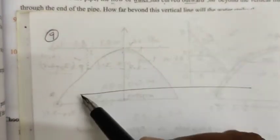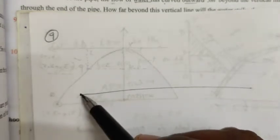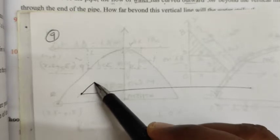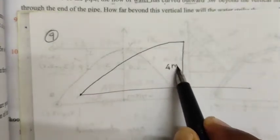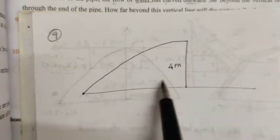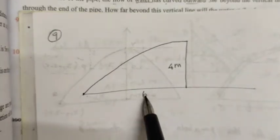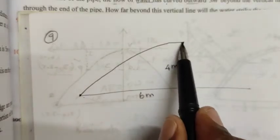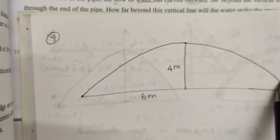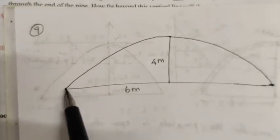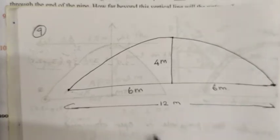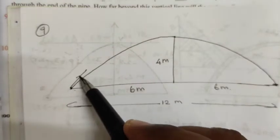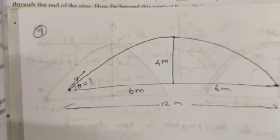Find the angle of projection. We have the question about the ground level — this is the point of projection. It reaches the ground level, reaching maximum height of 4 meters, with the point of projection at 6 meters. Finally, it reaches the ground level at 12 meters. The question is: what angle theta are we finding?